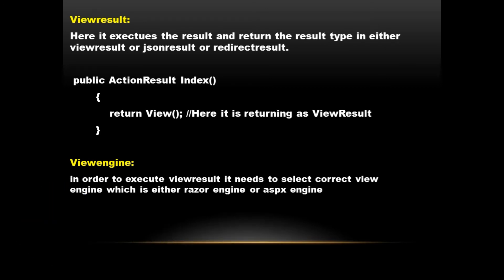The action method returns a view result. View is essentially a view result, and this view result is returned as the return type to the action result method. The action result is an abstract class, so view result and action result are compatible — they are essentially the same. After executing the action, it moves to the view engine block.